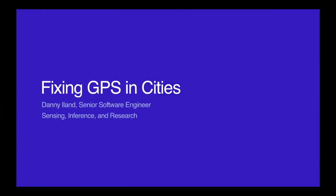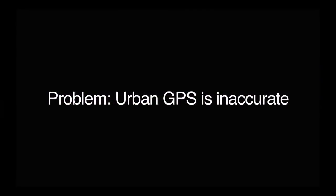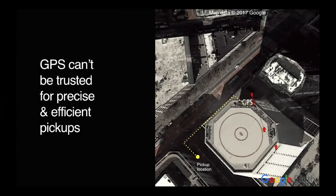So hi, I'm Danny Island. I'm an Android and also back-end developer on sensing inference and research. And I'm going to talk about how we can fundamentally fix how GPS works in cities. So there's a big problem with GPS when you're surrounded by tall buildings. The reflections and multi-path fading, basically the signals go all over the place.